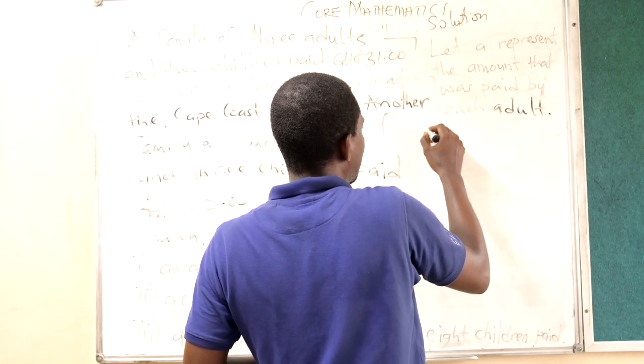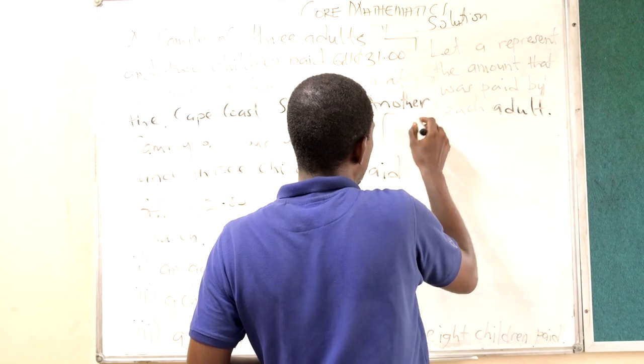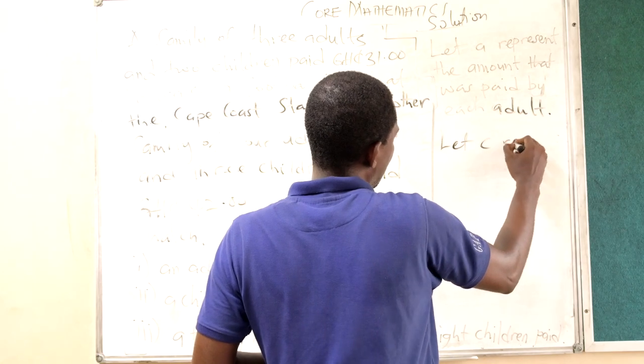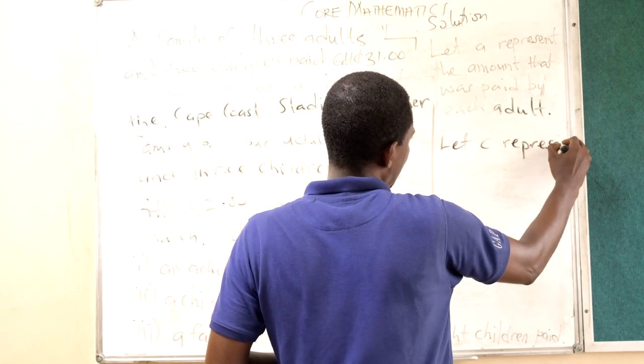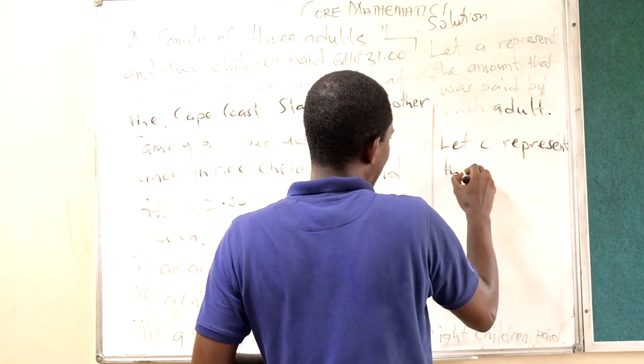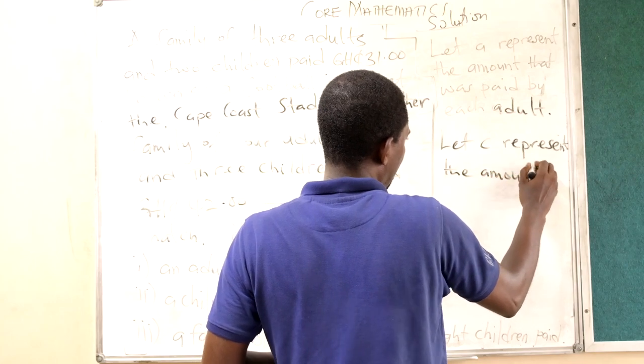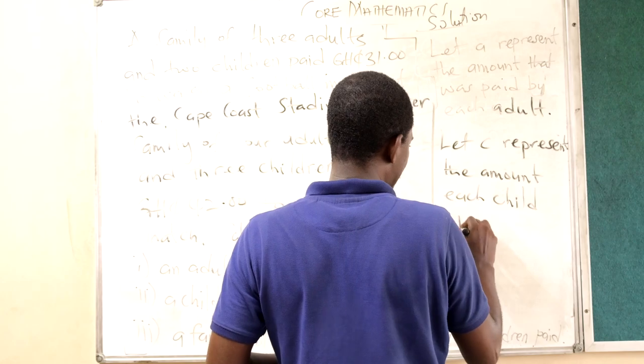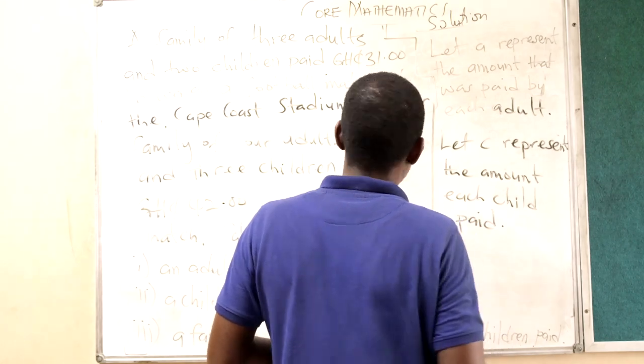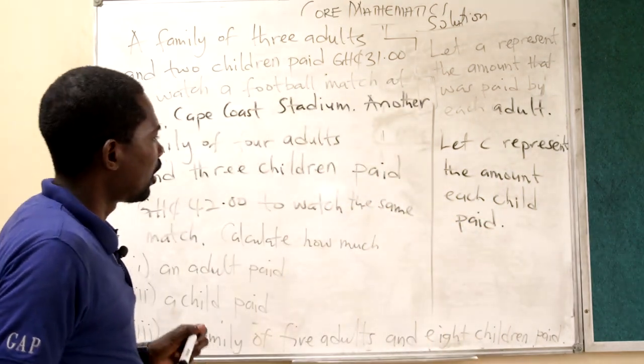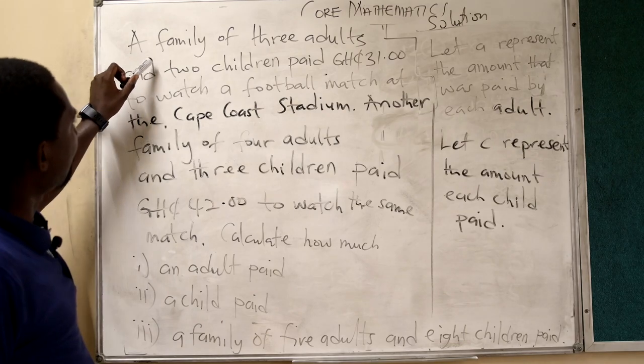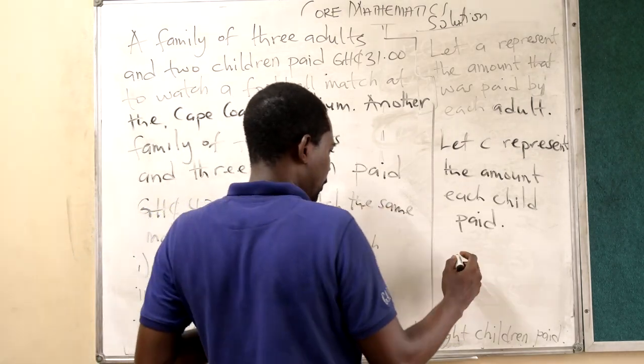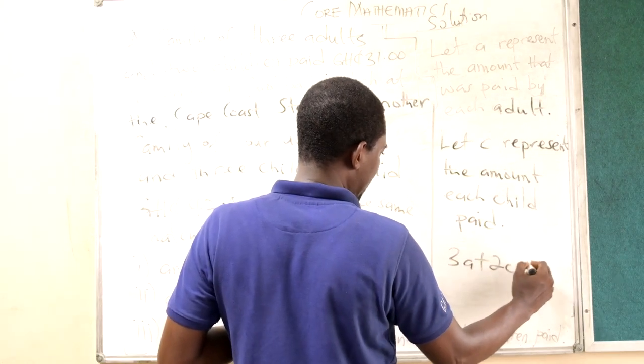Then let's also represent the amount each child paid. Now, the first family, there were three adults and two children. So three adults and two children.